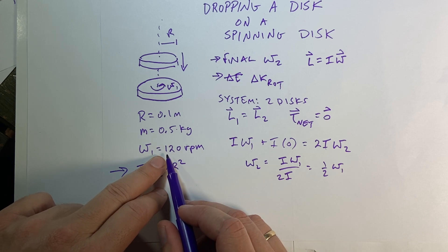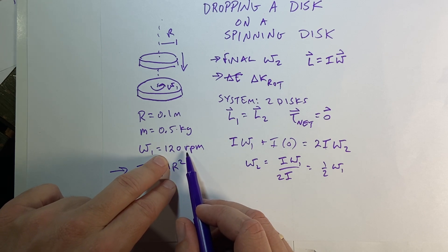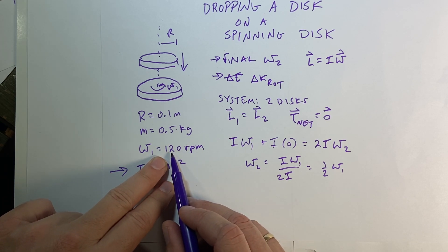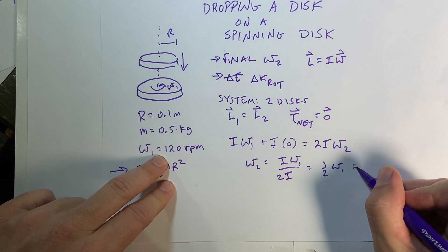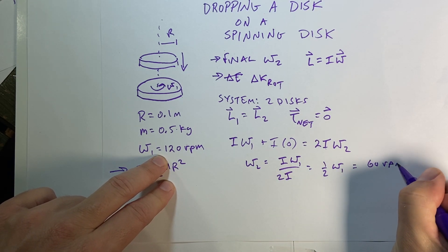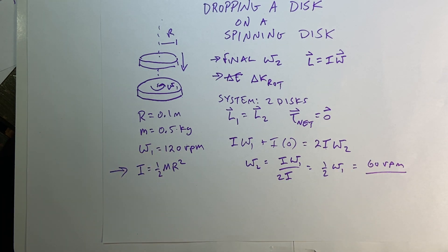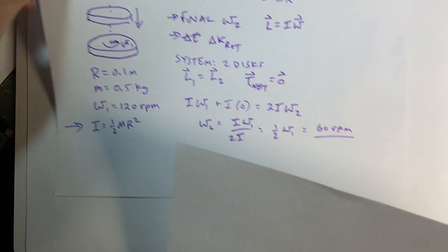If I said the initial angular velocity is 120 RPM, then this would be, omega-2 would be half that, so 60 RPM. And that's revolutions per minute. And I'm going to convert that into radians per second. Because now we want to look at the change in kinetic energy.